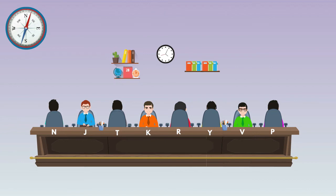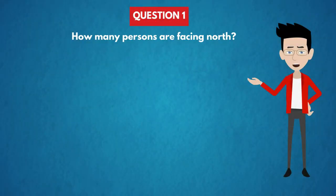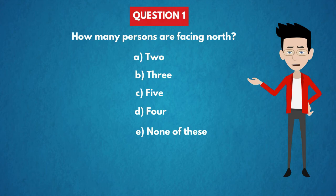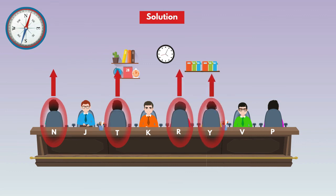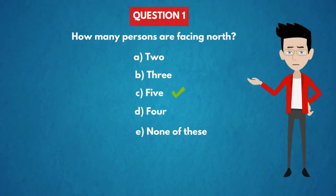Let's see the questions on this diagram. Question 1: How many persons are facing north? Options: A) 2, B) 3, C) 5, D) 4, E) None of these. In the diagram, N, T, R, Y and P face north direction — so 5 persons are facing north. The answer is Option C: 5.